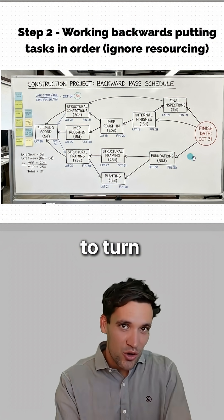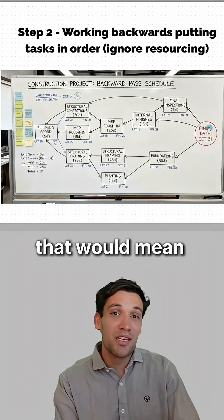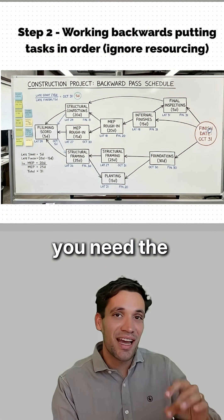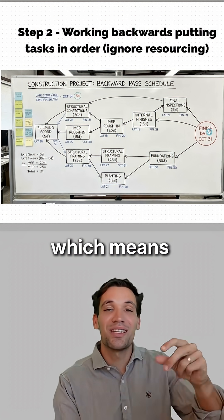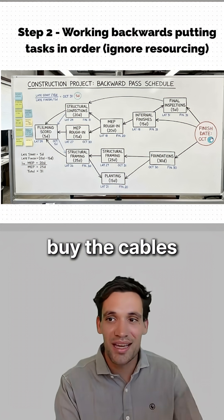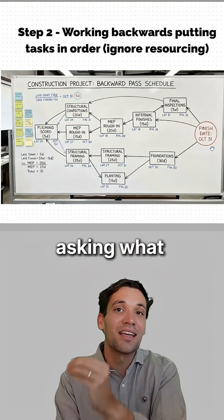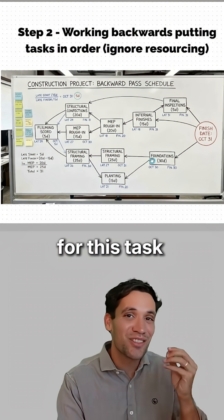For example, if you need to turn the power on on a certain date, that means you need the switchboard installed, which means you need the cables terminated and tested, which means you need the cables installed, which means you need to buy the cables. Work backwards from the finish date asking what needs to happen for this task to occur.